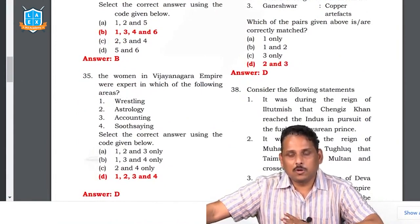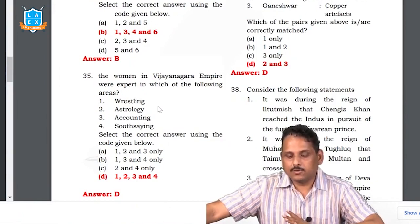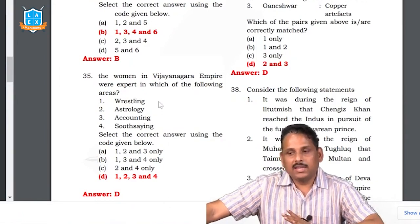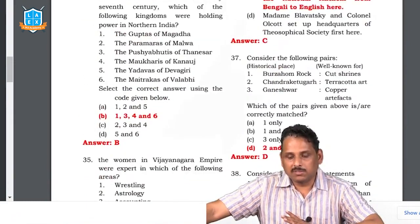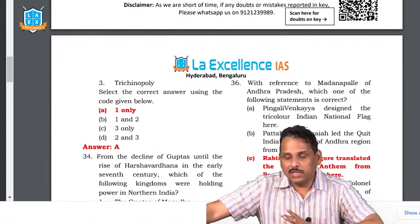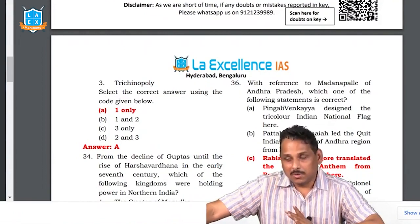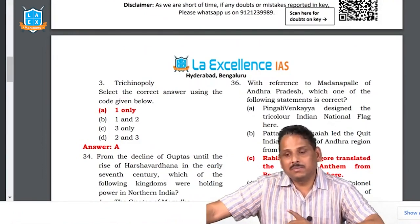Question 34: women in the Vijayanagara empire — CNA sir said soothsaying is also part of that. Women in the Vijayanagara empire were good at wrestling, astrology, accounting, soothsaying, and occupied most important positions in the royal court. The answer is D. Question 35: Madanapalle in Andhra Pradesh — there is Rishi Valley School. The place where Rabindranath Tagore stayed is still there today. Jiddu Krishnamurti's philosophy is driven through Rishi Valley School in Madanapalle. That is why Rabindranath Tagore is associated with it.